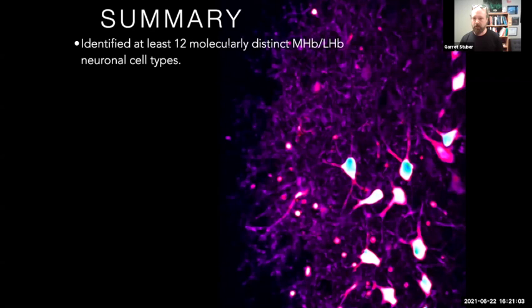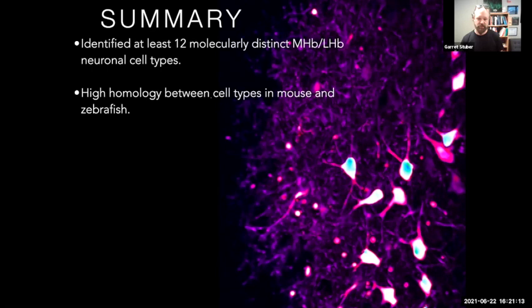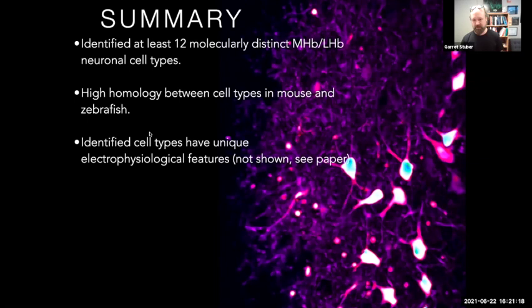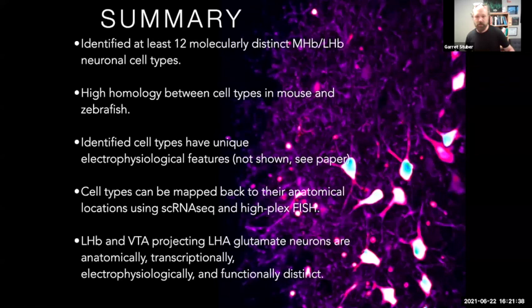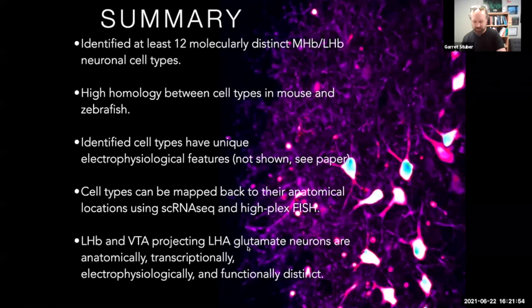To summarize: in the Hashikawa et al. paper, we identified 12 molecularly distinct medial and lateral habenula cell types, saw very high homology in gene expression between mouse and zebrafish using the Pandya et al. dataset, and showed that some cell types have unique electrophysiological features. We can map back the anatomical location of cells using single cell RNA sequencing combined with high-plex fluorescence in situ hybridization. The unpublished work from Mark Rossi shows that lateral habenula- and VTA-projecting lateral hypothalamic glutamate neurons are anatomically, transcriptionally, electrophysiologically, and functionally distinct from each other.